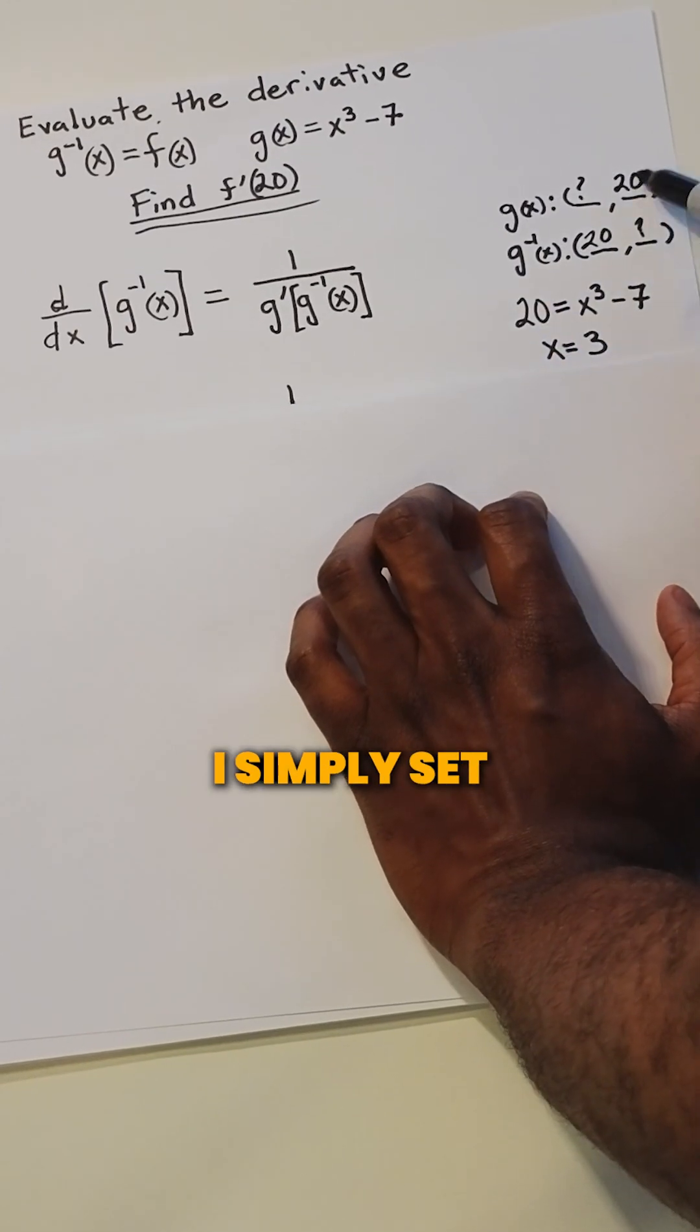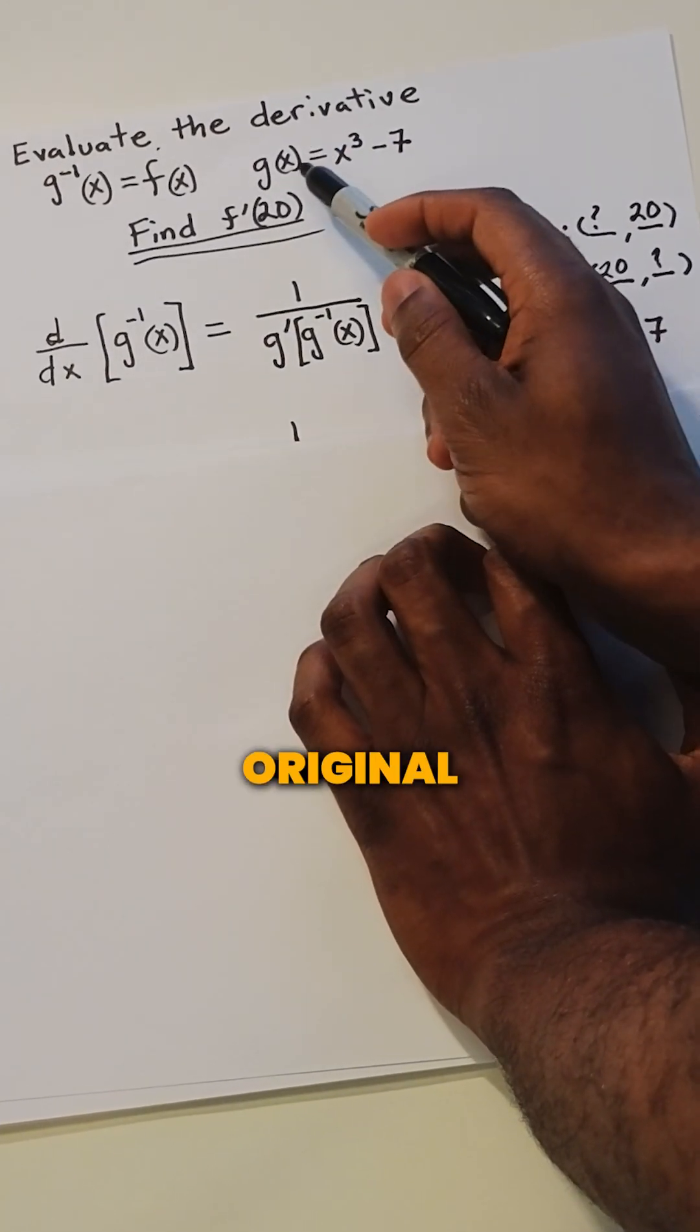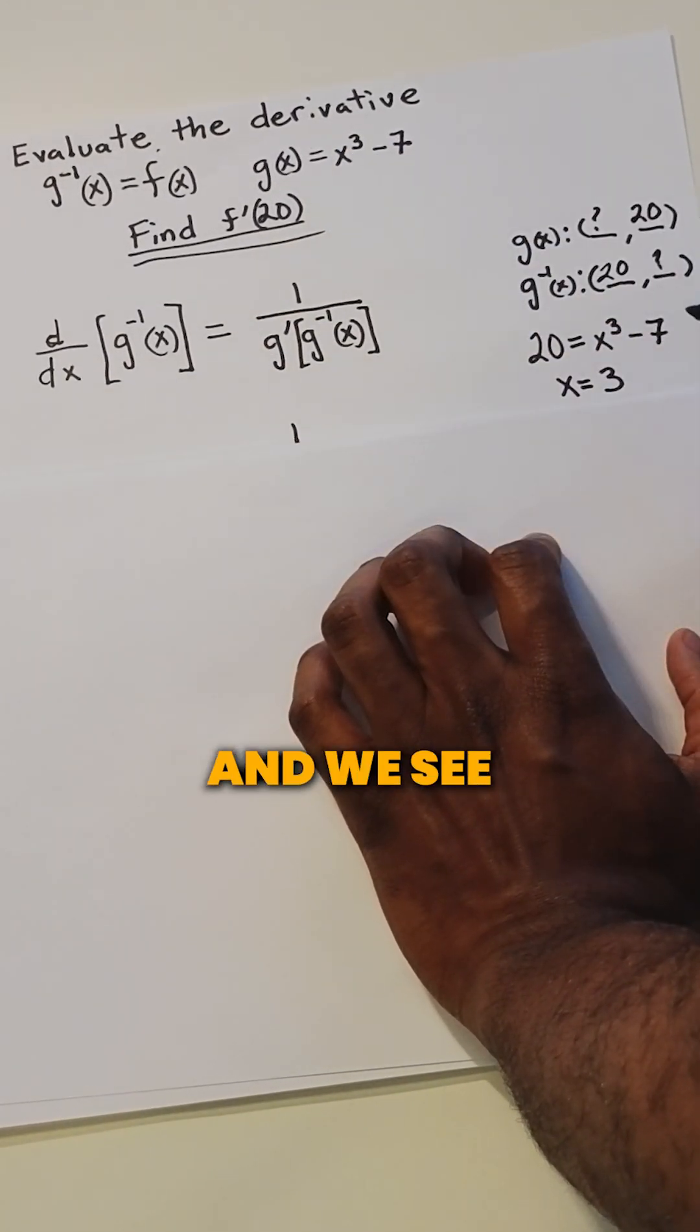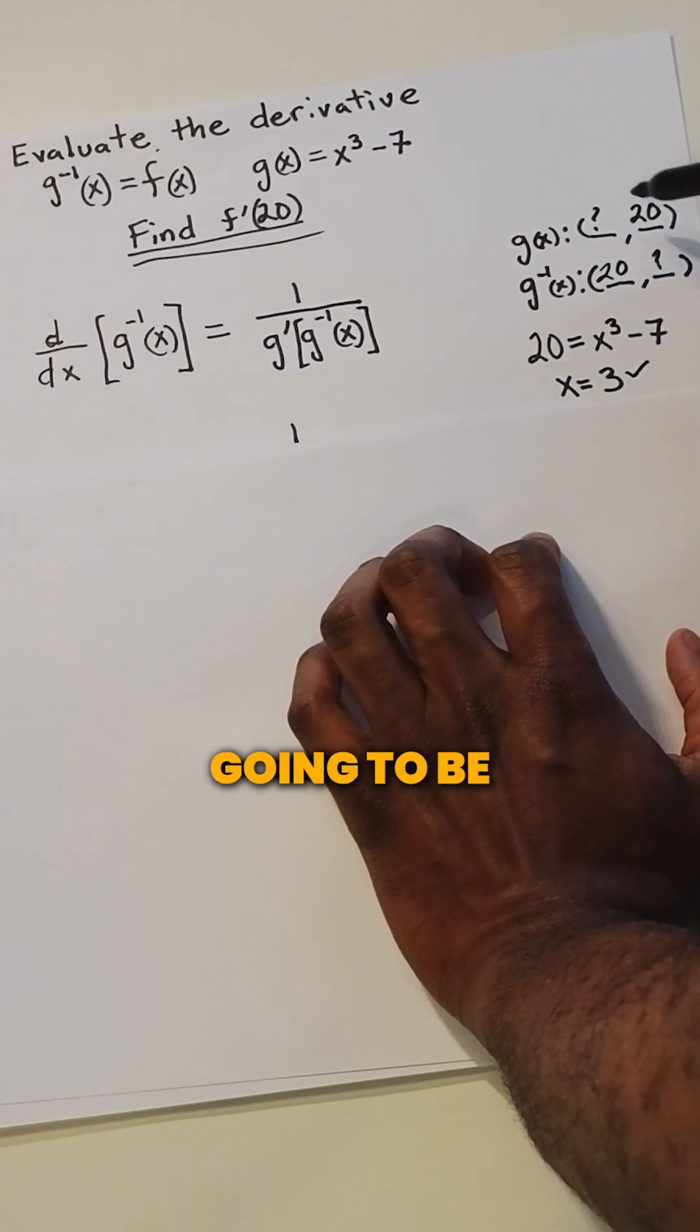How do I find that? I simply set 20 equal to our original equation because this is the y, and we see that 3 is going to be here.